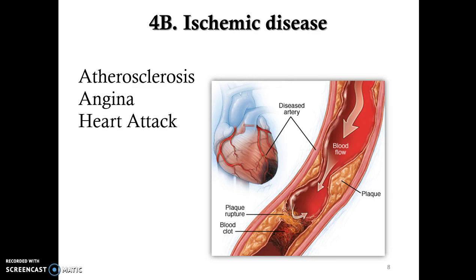The second type is ischemic disease. Ischemia is anytime there is a lack of oxygen to a part of the body. This can be associated with atherosclerosis — if you have plaque buildup in your arteries, you have reduced blood flow and you're not getting oxygen to that part of the heart. While atherosclerosis is more of a cause, the results would be angina or a heart attack. Angina is more temporary and less severe, more of a precursor to a heart attack, also known as myocardial infarction.